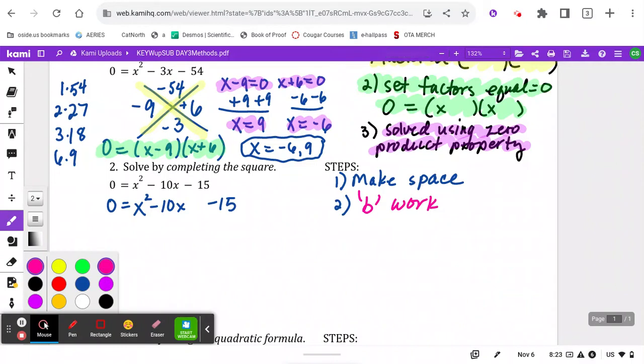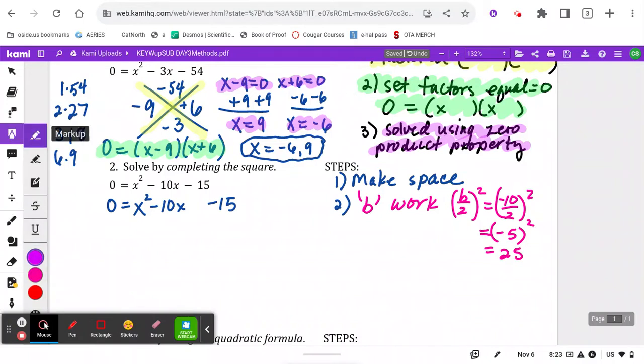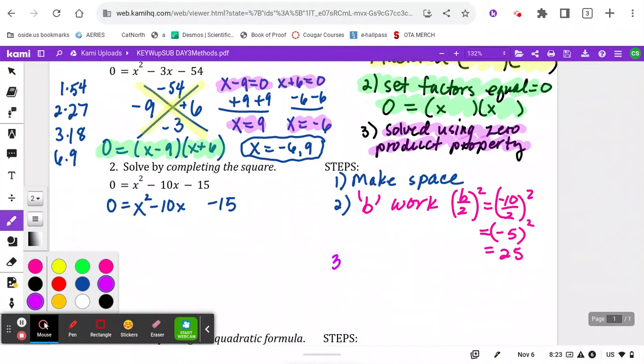Is still the same. So we're going to take half of our middle b, which in this case happens to be a negative 10. What is negative 10 divided by 2? Give us negative 5. What is negative 5 squared? It's 25. So the b work still applies like you're used to. We then add and subtract to balance that same b work. So plus 25 minus 25, same exact step you're used to from before.